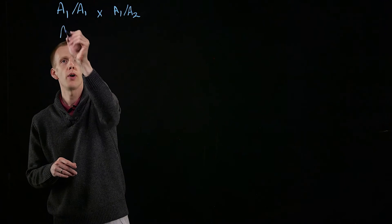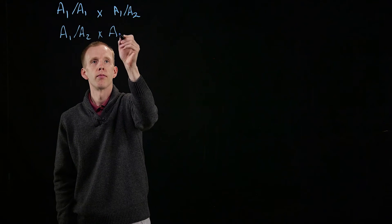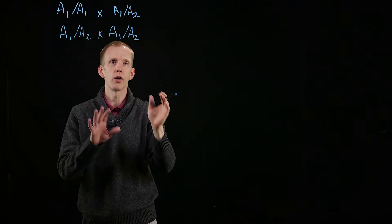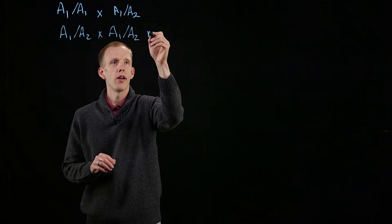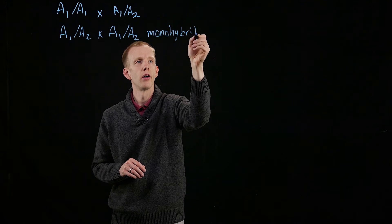But when we cross two heterozygotes together, we're looking at one gene, two alleles, that is the monohybrid cross.